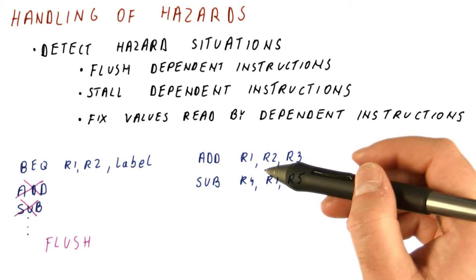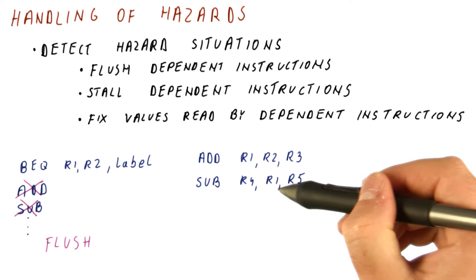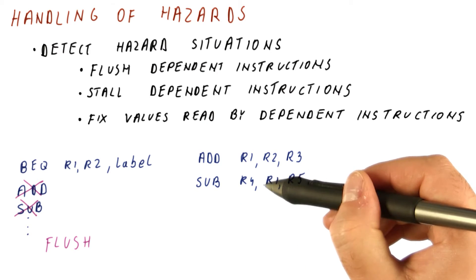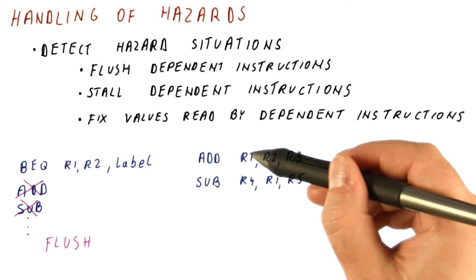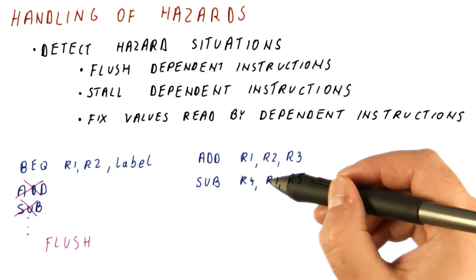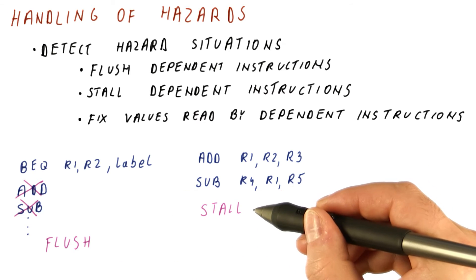If we have a data dependence, we can stall the subtract so that it stays in the stage where it would read R1 until finally the add deposits that value in the register. So for hazards caused by data dependencies, we do not have to flush. We can simply stall.